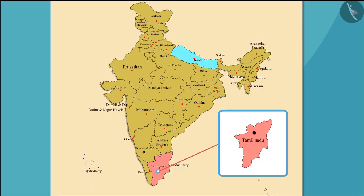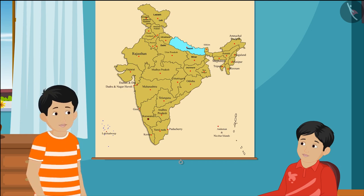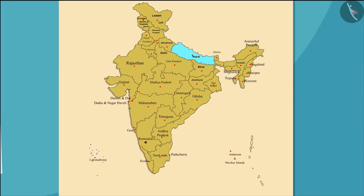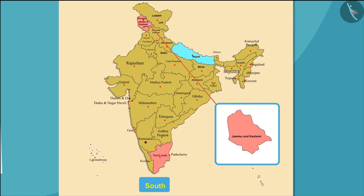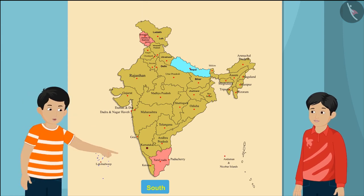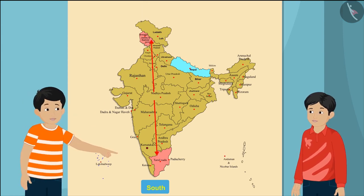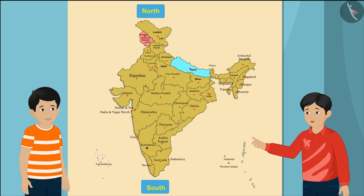Govind is going to Tamil Nadu with his family. Looking at the map carefully, Tamil Nadu is a southern state of India, while Jammu and Kashmir is where Raju is going for the holidays. Jammu and Kashmir and Tamil Nadu are in opposite directions.